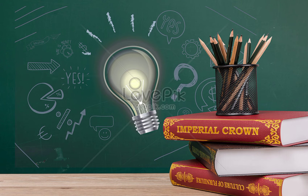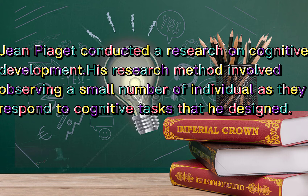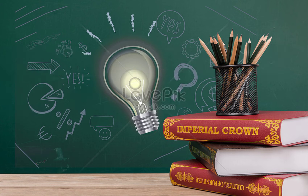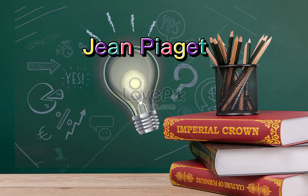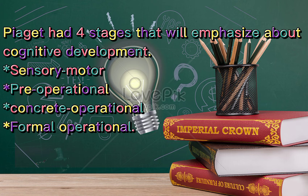Jean Piaget's Cognitive Theory of Development: Jean Piaget conducted research on cognitive development. His method involved observing a small number of individuals as they responded to cognitive tasks he designed, later known as Piagetian tasks. Piaget called his framework genetic epistemology, as he was interested in how knowledge develops in human organisms. He used the term schema to refer to cognitive structures. Piaget identified four stages: sensorimotor, preoperational, concrete operational, and formal operational.